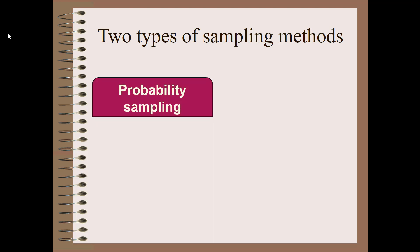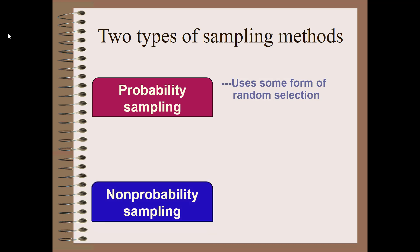There are two types of sampling methods, two major categories. There's probability sampling, which uses some form of random selection, and non-probability sampling, where selection is systematic or can be haphazard, but it's not random. The key word here is random. One involves random methods and the other does not.